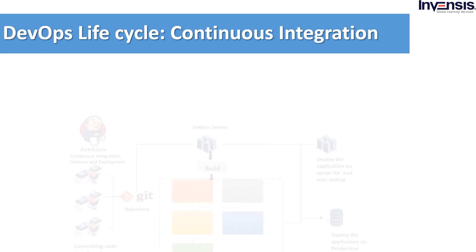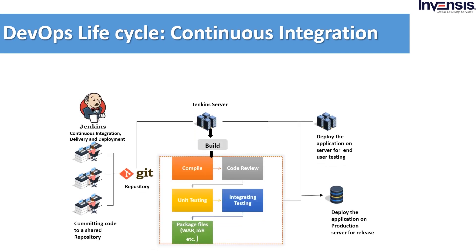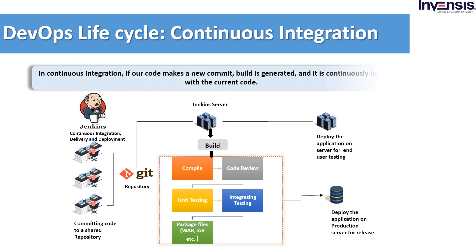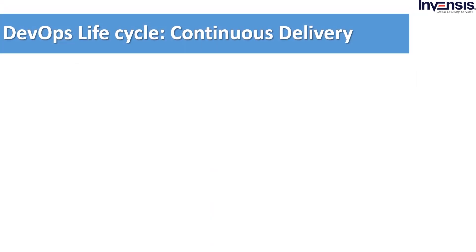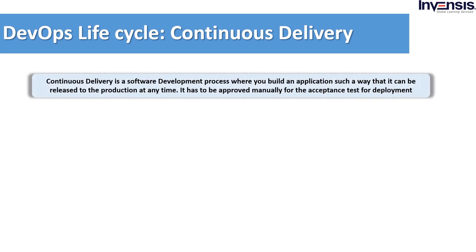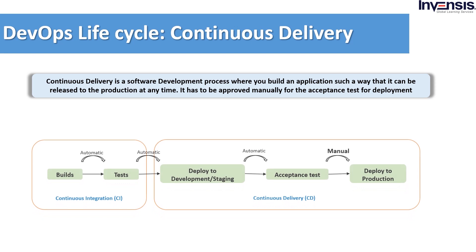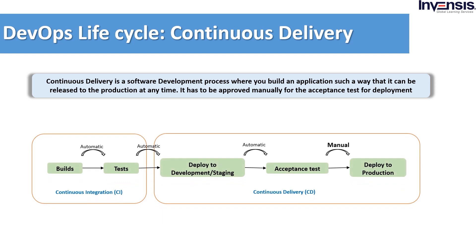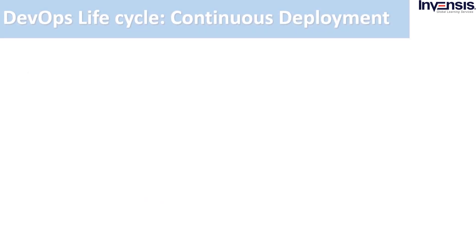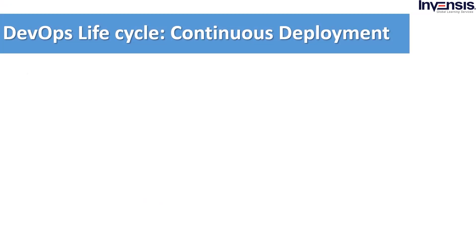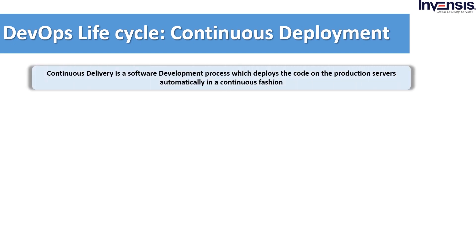Let us now understand this using the image. This is the distributed version control system which does not rely on a central server to store all the versions of the project files. Here, every developer has a clone or a local copy of the main repository, containing all the files and metadata present in the main repository — that is, Git. Every developer can commit and update the local repository without any conflict.